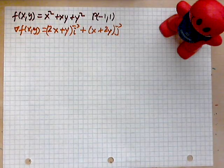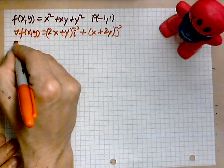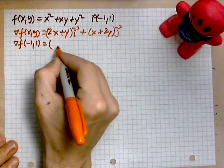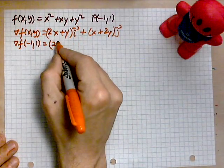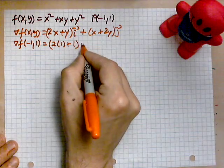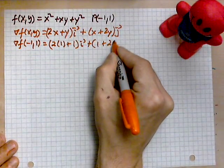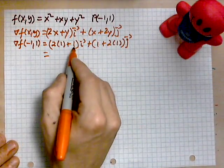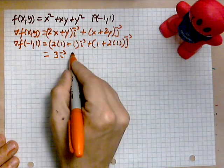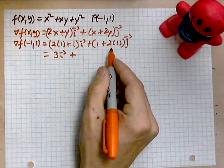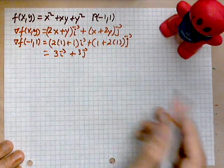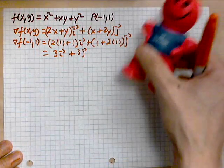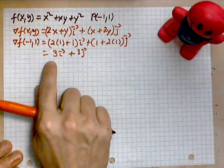Next we evaluate the gradient at the point negative 1 comma 1. Making the replacements: 2(−1) + 1 gives −2 + 1 = −1 for the i-component, and (−1) + 2(1) gives −1 + 2 = 1 for the j-component. So the gradient evaluated at (−1, 1) is −i + j. Note: the instructor computed using (1,1) and obtained 3i + 3j on screen.